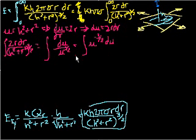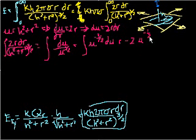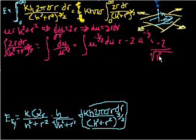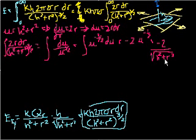That's easy — it's just the power rule. This equals minus 2·u to the negative 1/2. We can confirm: negative 1/2 times negative 2 equals 1, and subtracting 1 from negative 1/2 gives negative 3/2. We can add a constant c, but since we're doing a definite integral the c's cancel out. Substituting back, this equals negative 2 over the square root of h² + r².